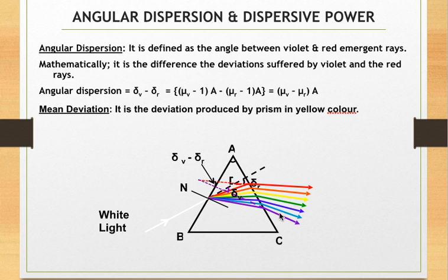So different colors get deviated through different angles. We define mean deviation for yellow color because its wavelength is in the middle of the visible part of the spectrum.